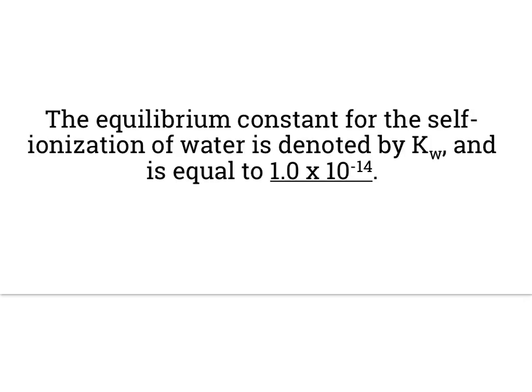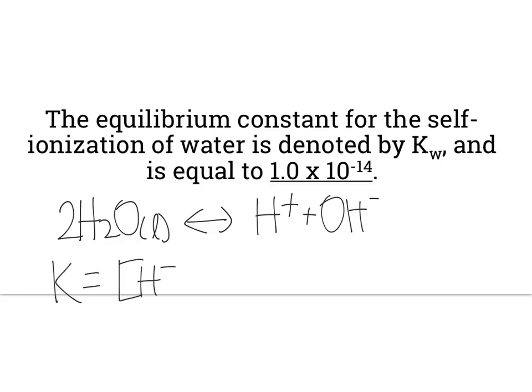So, equilibrium constant, then, for that equation is 1.0 times 10 to the negative 14th. Let me show you what I mean by equilibrium constant. So, back to this equation. If we make our equilibrium constant, we would have H plus times OH minus over H2O squared, except this is a liquid. We don't write liquids in our equilibrium constants.